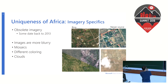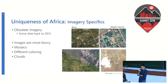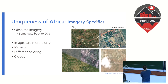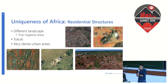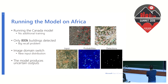Before starting extraction in any region we first look at how the imagery looks and what is different compared to what we've worked with in North America. The first thing we noticed is that Bing imagery in Africa is of variable, old vintage — several years old — which is a problem even with perfect computer vision, since extracted buildings may not correspond to real-world buildings. Images are also much more blurry, mosaics combine imagery from different providers and years with different coloring, clouds obscure the process, and there are new residential shapes our network had never seen, like round buildings and highly connected urban buildings.